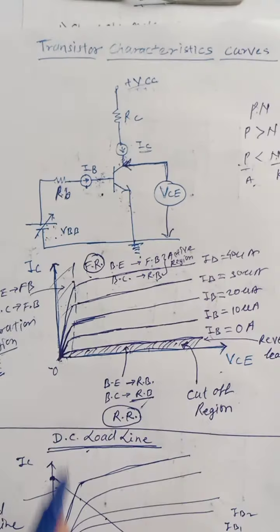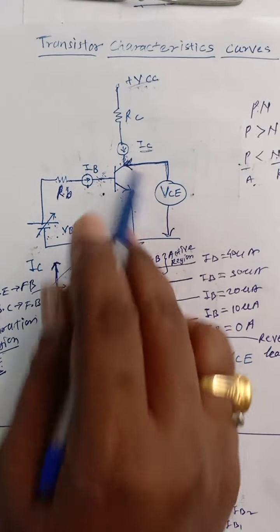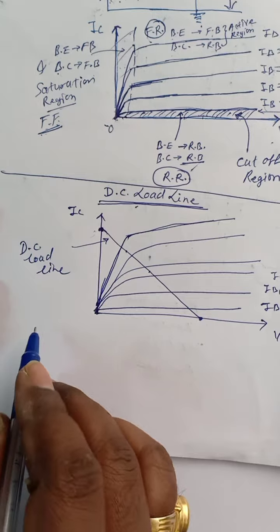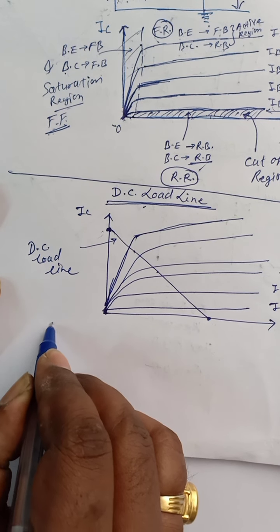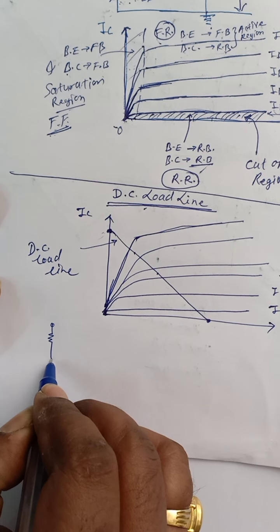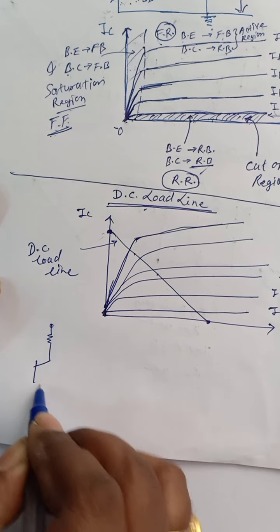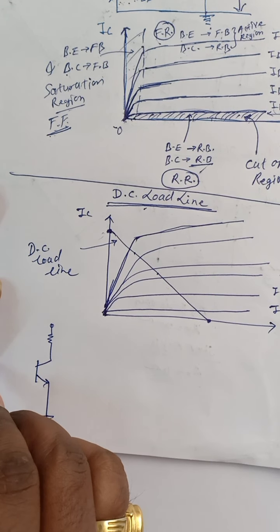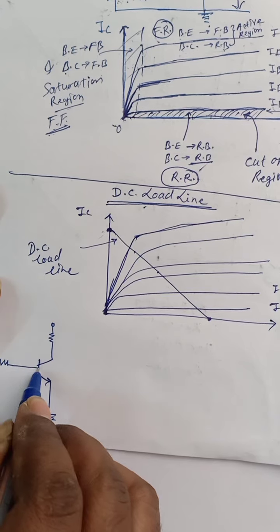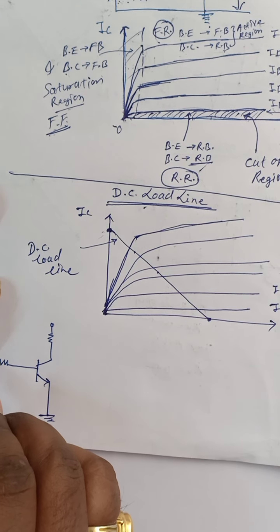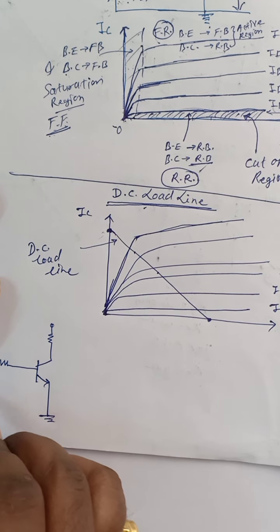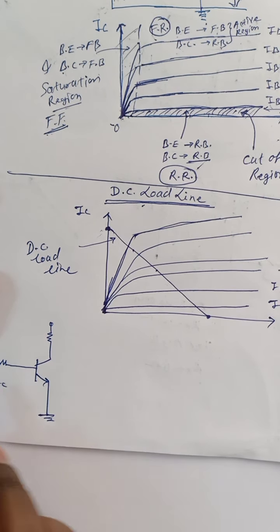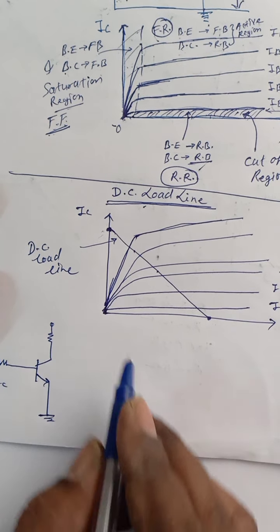For the DC load line, consider the same common emitter configuration circuit. Here we are going to apply an AC voltage which should be amplified and you will get the output. To operate this transistor we require a DC voltage.